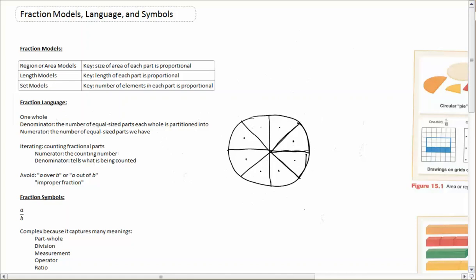A couple things to avoid when you're using fraction language. Avoid saying A over B. For example, if I have this fraction here, don't call that 3 over 4. Don't call it 3 out of 4. We want to name the denominator as the part, so we want to say 3 fourths.